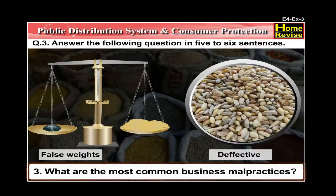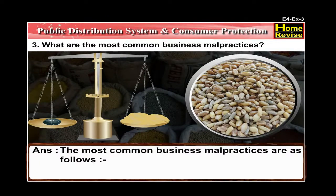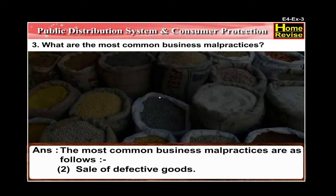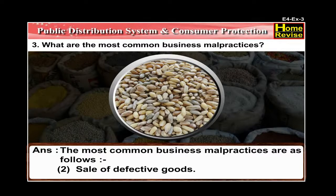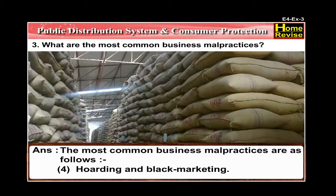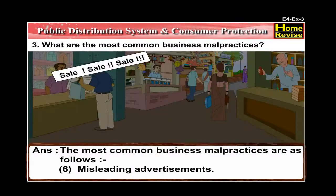Number 3: What are the most common business malpractices? The answer is: the most common business malpractices are — sale of adulterated goods, sale of defective goods, use of false weights and measures, hoarding and black marketing, charging more than the maximum retail price (MRP), and misleading advertisements.